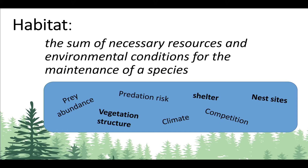Habitat — when thinking about wildlife — is the sum of all necessary resources and environmental conditions required for the maintenance of a species. This includes not only vegetation structures and shelter components, but also prey abundance across the landscape and the level of competition. For example, for northern spotted owls a new habitat component we need to consider is the density of barred owls spread across the landscape — and that's not something we can really map well yet. We also need to think about climate and aspect of hillslopes.